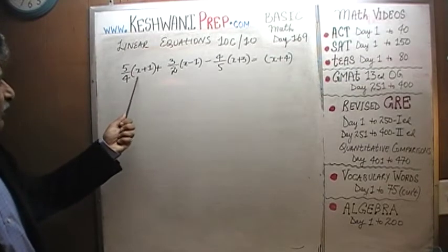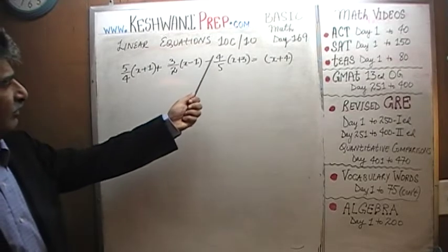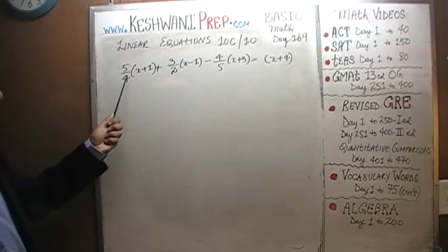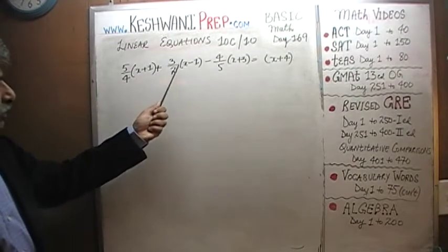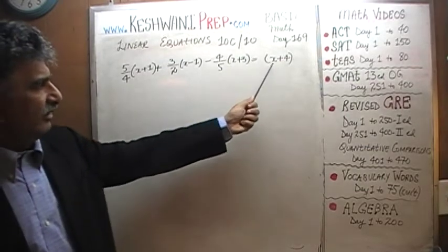We are told that 5/4(x+1) + 3/2(x-1) - 4/5(x+3) = x+4. One more time. 5 over 4 times x plus 1 plus 3 over 2 times x minus 1 minus 4 over 5 times x plus 3 equals x plus 4.